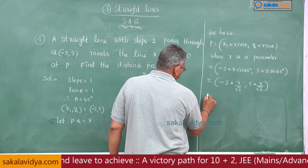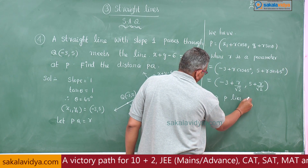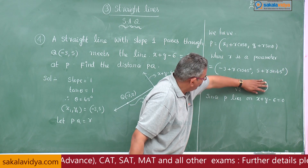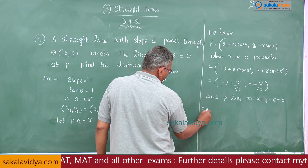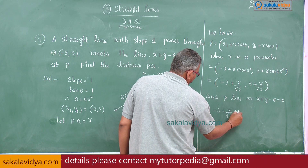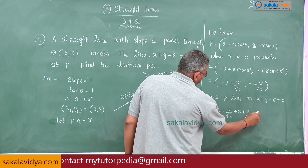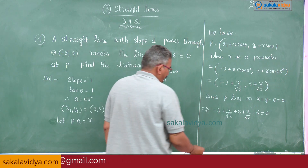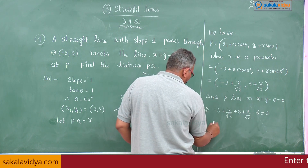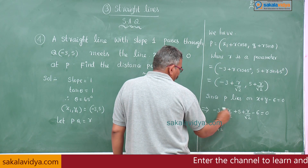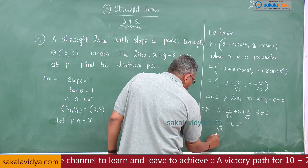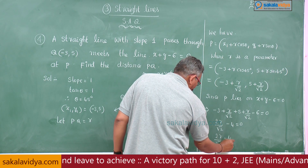Since P lies on x plus y minus 6 equals 0, we substitute the x and y coordinates of P. That gives: minus 3 plus r by root 2 plus 5 plus r by root 2 minus 6 equals 0. Combining constants: 5 minus 3 minus 6 equals minus 4, and r by root 2 plus r by root 2 gives 2r by root 2. So, 2r by root 2 minus 4 equals 0.